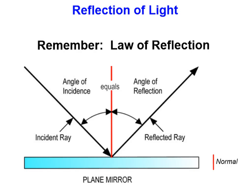Have you ever been in a cave where there was no light at all? What did you see? Nothing. Without visible light we cannot see anything. Remember, light reflects off of mirrors, paper, a table, a wall, a desk — any object that you're looking at. Light will be reflected off of that.